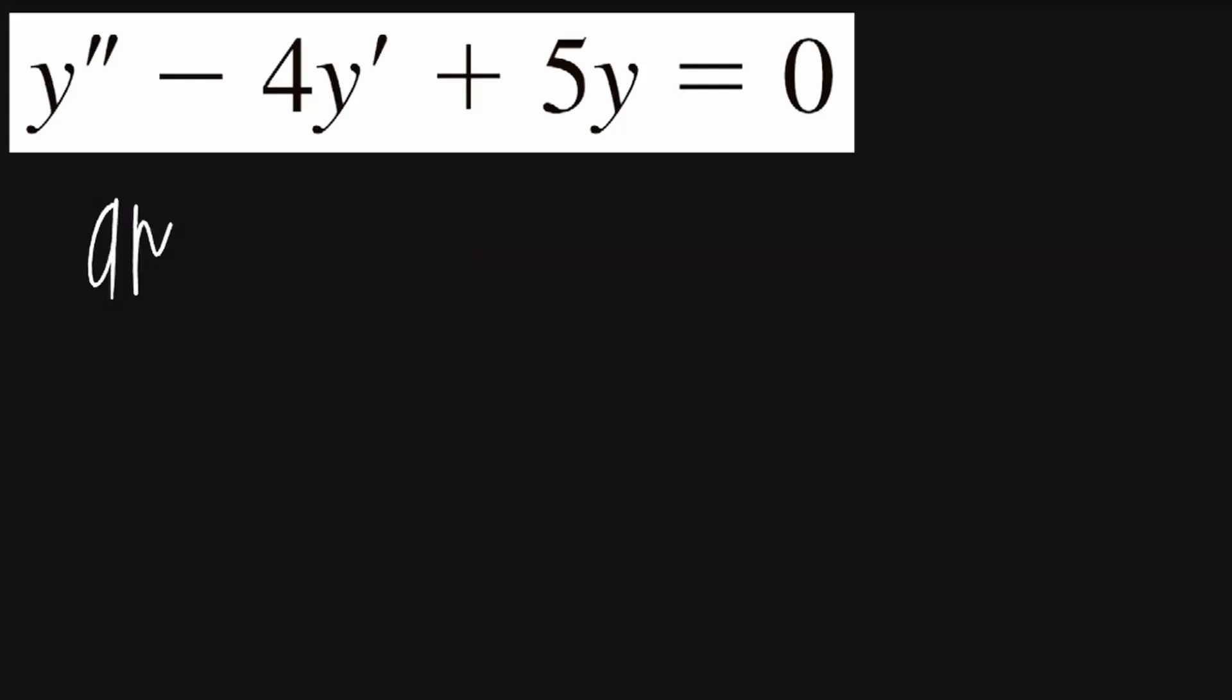For this problem, I'll find the auxiliary equation, which will be in the form a times m squared plus b times m plus c equals 0. The differential equation is in the form a times y double prime plus b times y prime plus c times y equals 0. The coefficient of y double prime is 1, so a is going to be equal to 1.